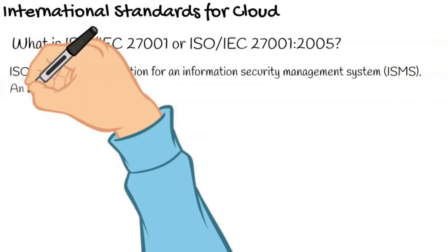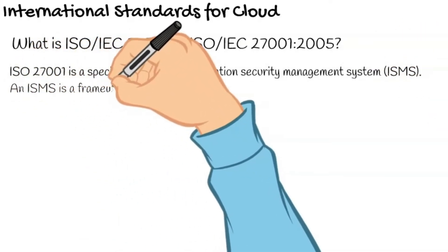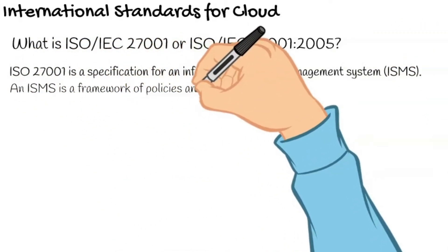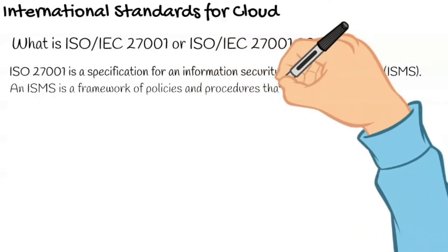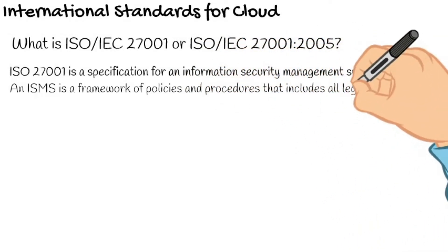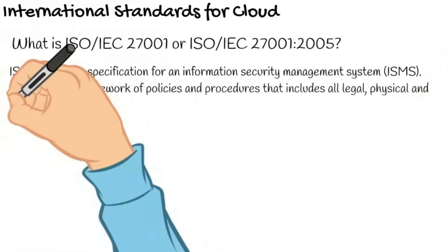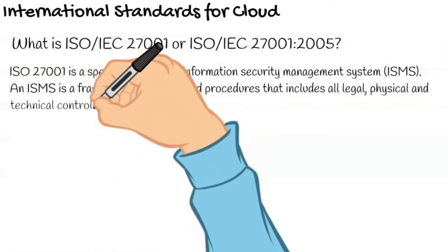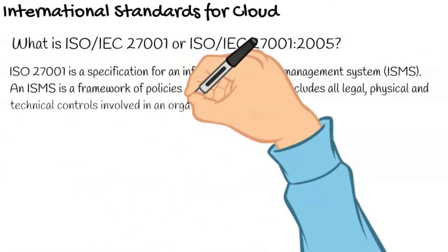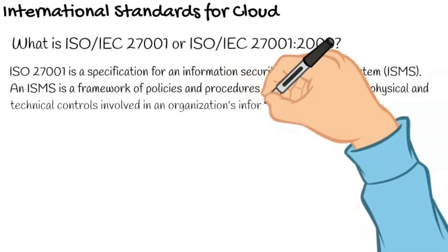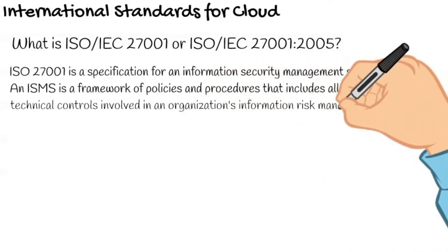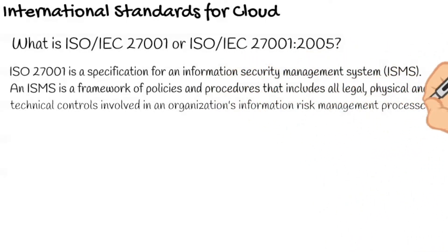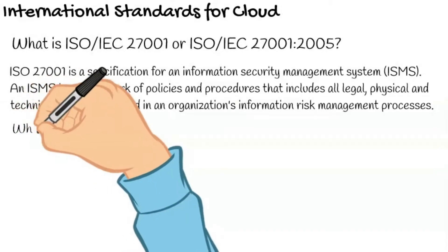ISO 27001 is a framework of policies and procedures that includes all legal, physical and technical controls involved in an organization's information risk management processes. ISO 27001 uses a top-down, risk-based approach and is technology neutral.